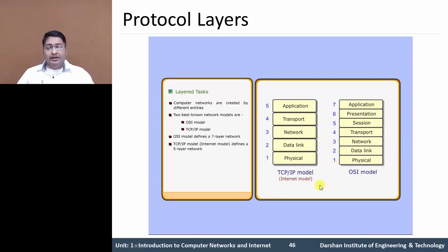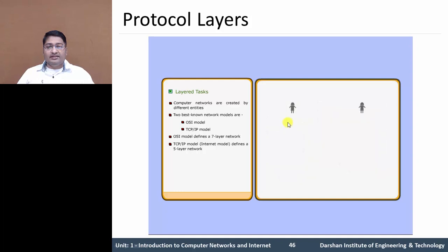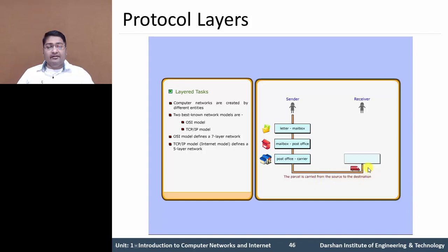To understand these layers, we need a real-time example. Let's see: sender sends a letter to receiver. At that time, sender writes mail, puts it into the envelope, and drops it into the mailbox. From the mailbox, the courier boy receives it and drops it into the post office. At the post office, the letter is sorted and passed to carrier transformation. The parcel is carried from source to destination. At the receiver side, the letter is delivered to the post office, sorted again, and passed to the mailbox of the receiver. Receiver receives it, opens it, and reads it.